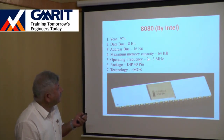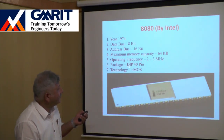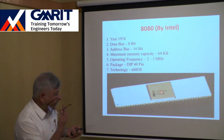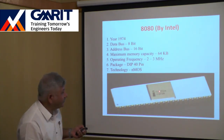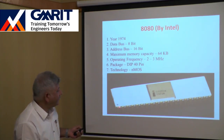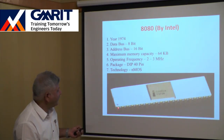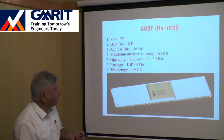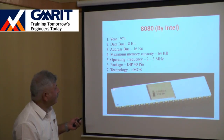The 8080's operating frequency was 2 to 3 MHz. The package was still DIP, but the number of pins increased to 40. It has a notch and a marking indicating pin number 1, with pins 1–20 on one side and pins 21–40 on the other.